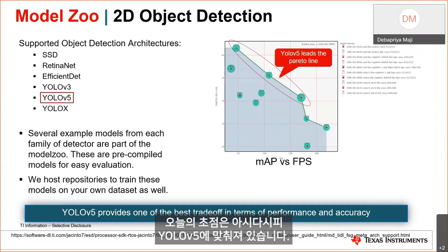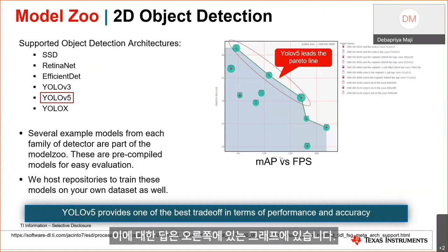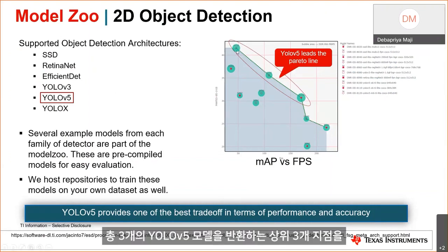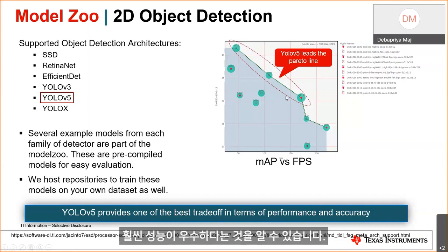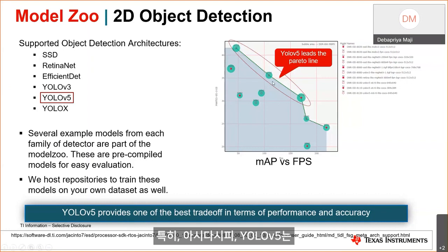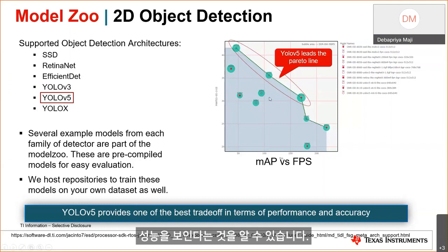We support object detection architectures including SSD, EfficientDet, YOLO v3, YOLO v5, and YOLO X. Today's focus is on YOLO v5. What makes YOLO v5 special? Looking at the graph of FPS versus mAP used for object detection benchmarking, the top three circled points represent three YOLO v5 models, and you can see YOLO v5 significantly outperforms other detection architectures. Compared against YOLO v3, YOLO v5 is quite much better and significantly outperforms it.